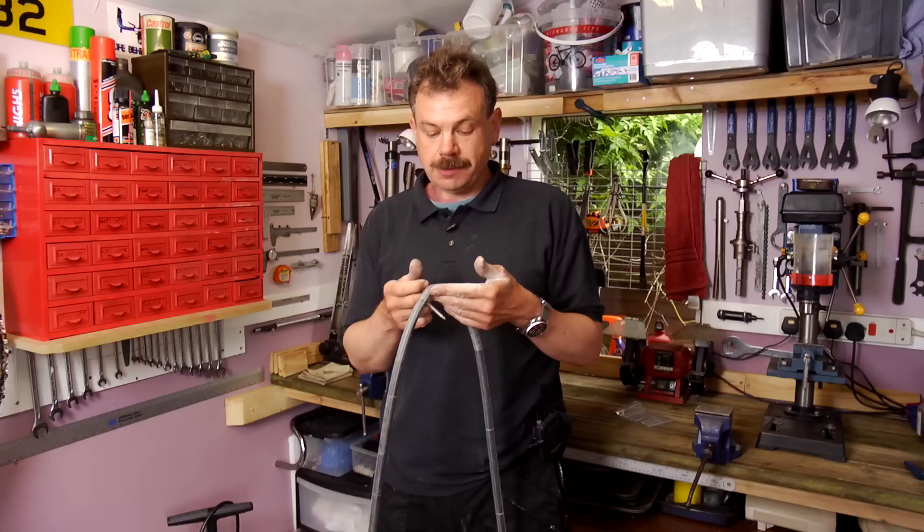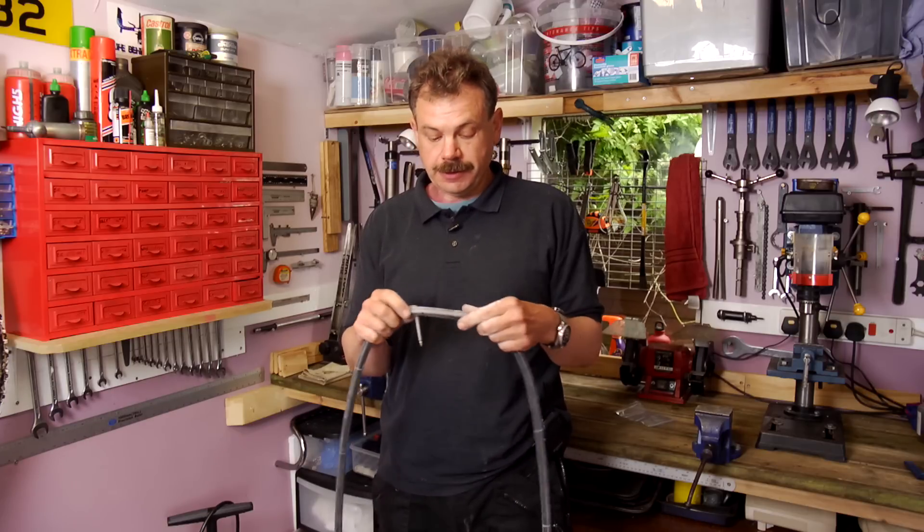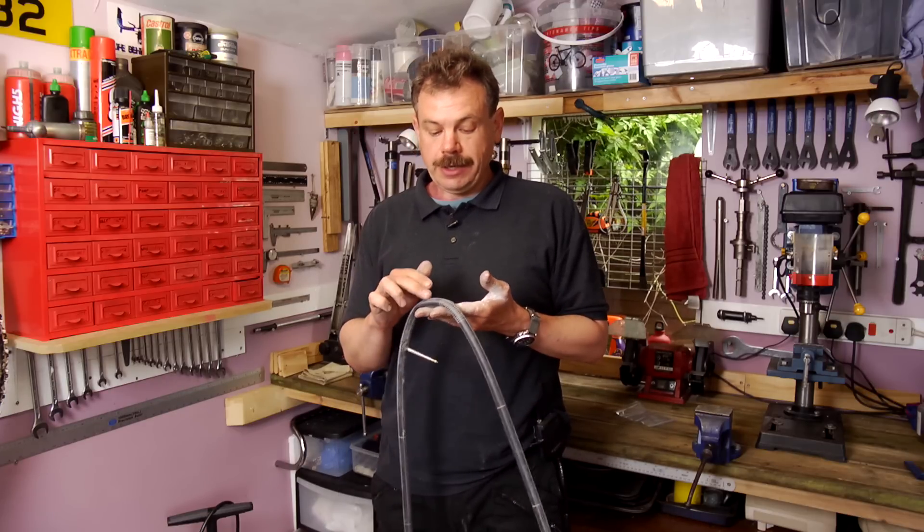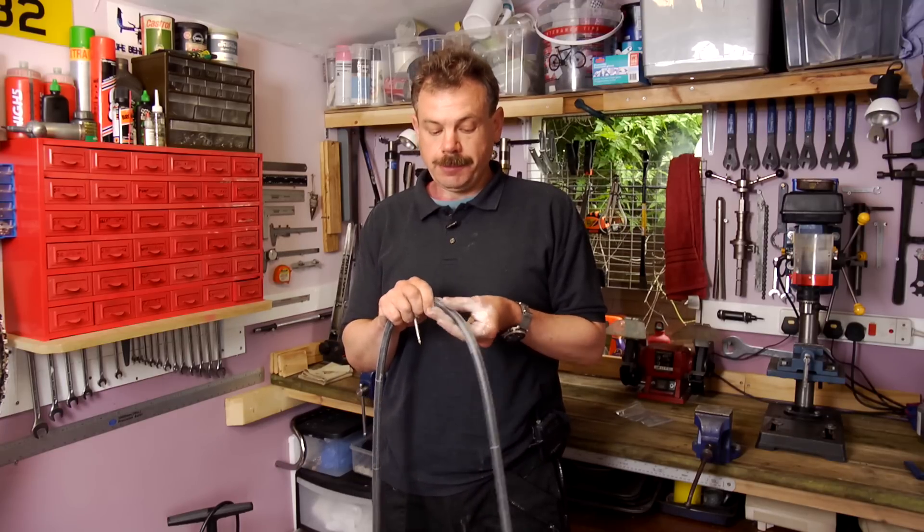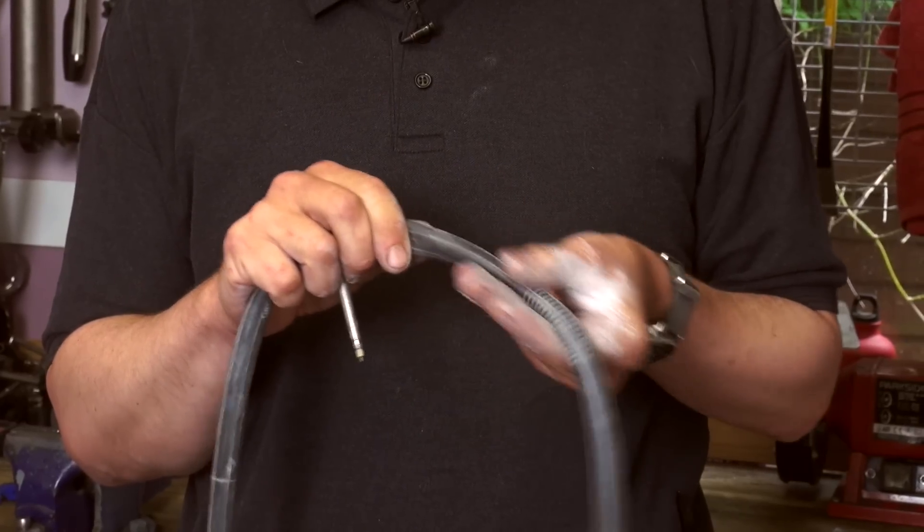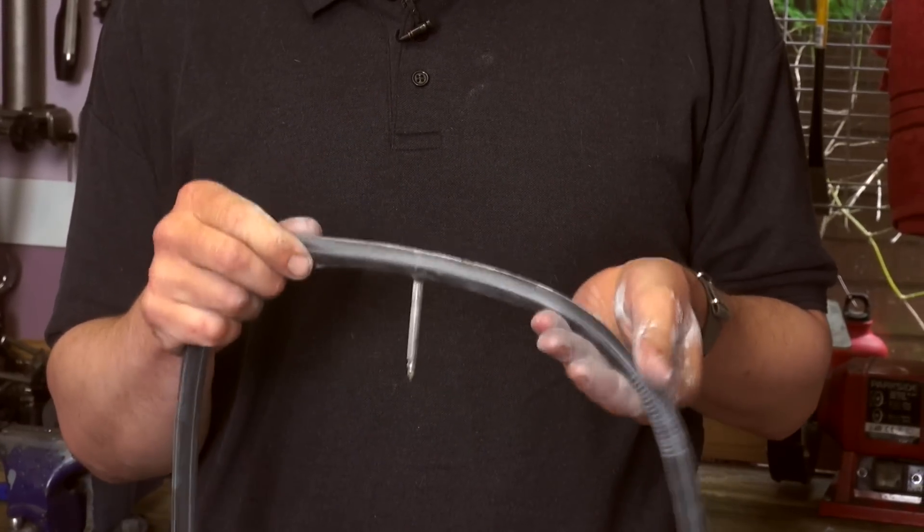Which can be a problem sometimes. It can make the inner tube difficult to remove from the tyre. And when you make a puncture repair, any of the rubber solution that you've used is then neutralized with the talcum powder so that can't stick to the inside of the tyre.